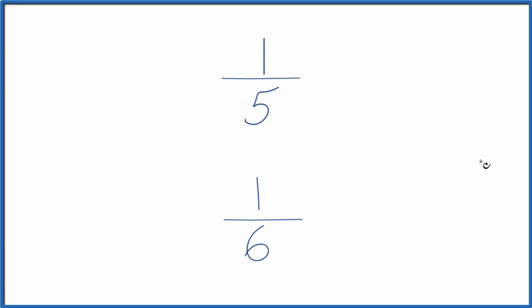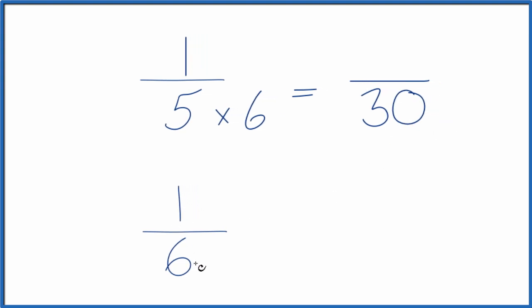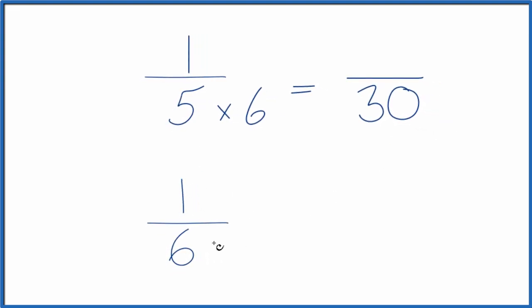Once we do that, we can just compare the numerators. The way I'm going to do this is I'm going to take 5 and multiply it times 6. 5 times 6, that equals 30. So we have our denominator 30 here. Down here, I'm going to take 6 and multiply it times 5. And that also gives us a denominator of 30.